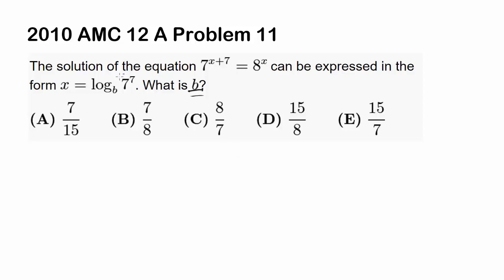We want to somehow isolate 7 to the 7th power. By exponent rule, 7 to the x plus 7 can be split up as 7 to the x power times 7 to the 7th power.